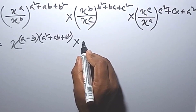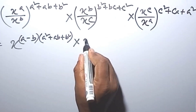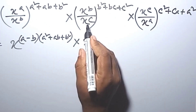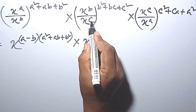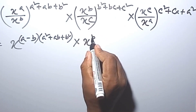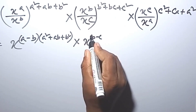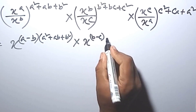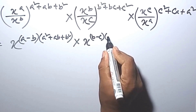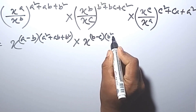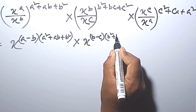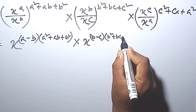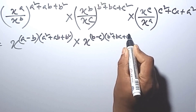Again, this we can write as x to the power of b minus c, multiplied by b squared plus bc plus c squared.